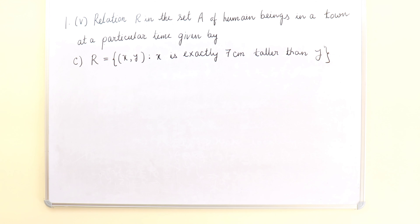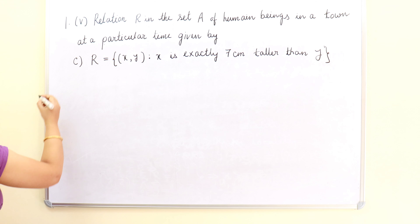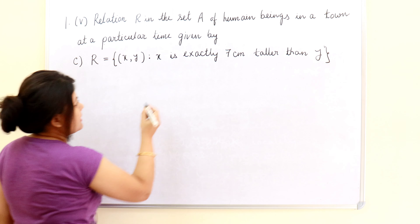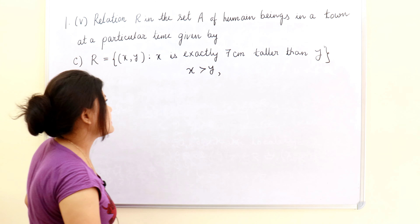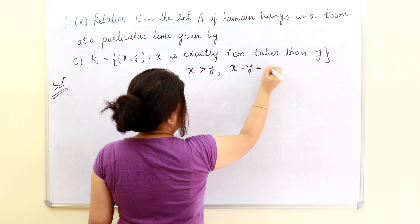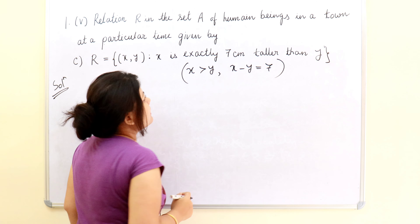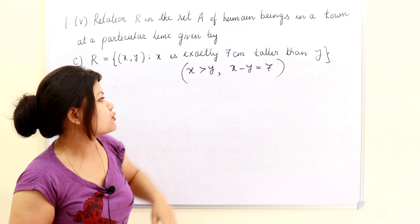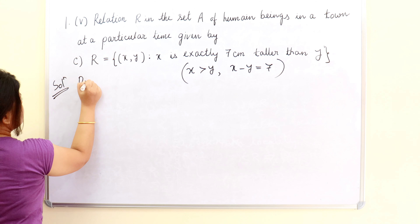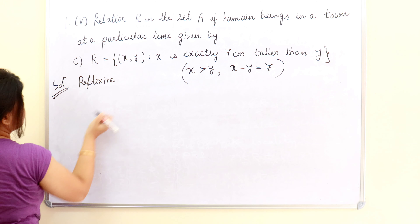Next question: given relation R in the set A of human beings in a town at a particular time, given by R = {(X,Y): X is exactly 7 cm taller than Y}. So the meaning of this is: X is greater than Y — this is the first condition. Second: X minus Y equals 7, because X is exactly 7 cm taller than Y, so X − Y = 7. First, we will go for reflexive.